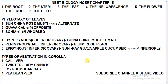From soil to air, the parts of the plant are: the root, the stem, the leaf, the inflorescence, the flower, the fruit, and the seed.